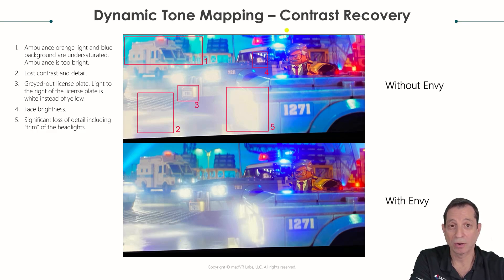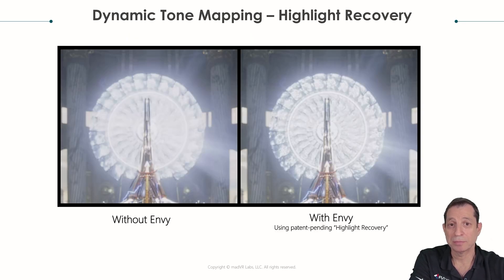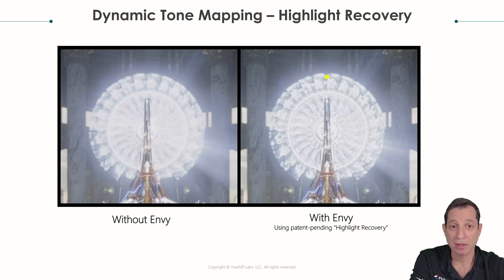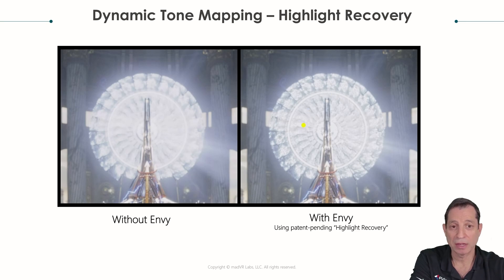This is an aspect of our tone mapping called contrast recovery. And this is another aspect called highlight recovery — it restores details that are normally blown out and crushed in the brights. Look at all the intricate details here and how it's just washed over on the other side, and the whole inner dome that's crushed out compared to the extra clarity and detail found here.